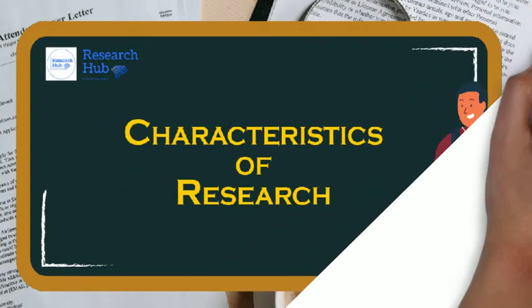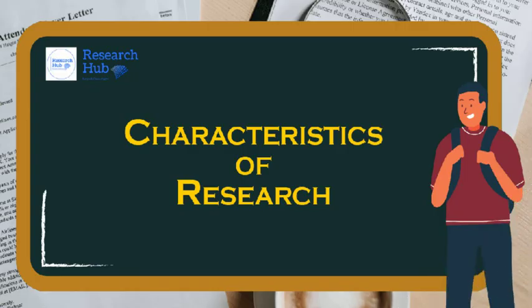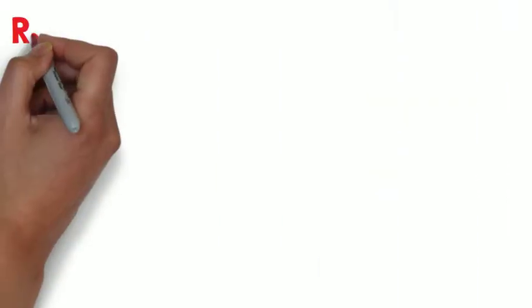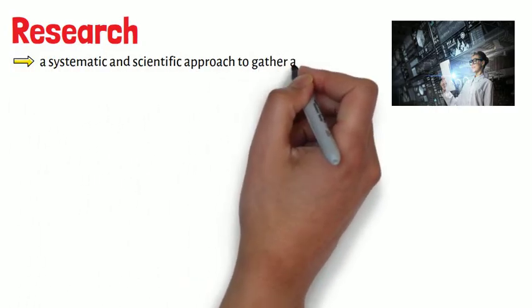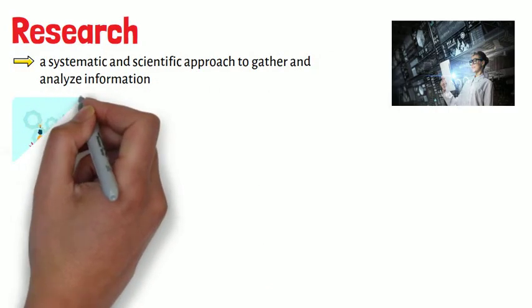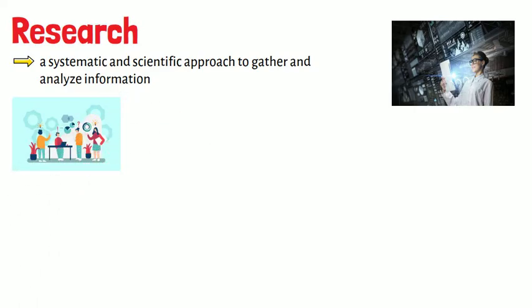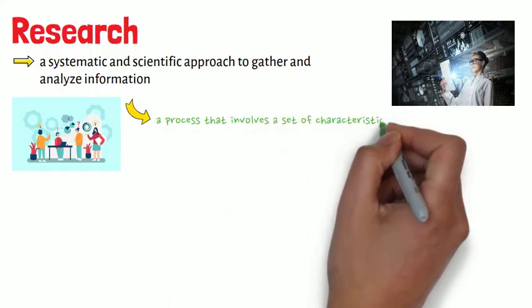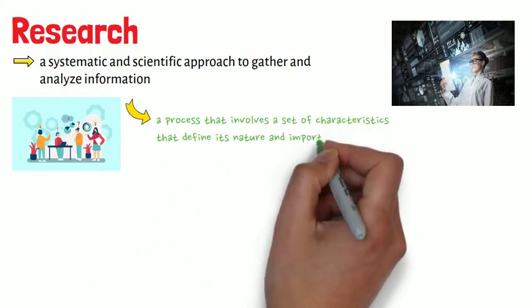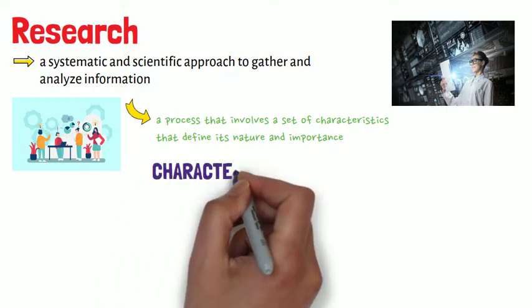Characteristics of research. First of all, research is a systematic and scientific approach to gather and analyse information to find solutions to problems or answer questions. It is a process that involves a set of characteristics that define its nature and importance. Here are some of the essential characteristics of research.